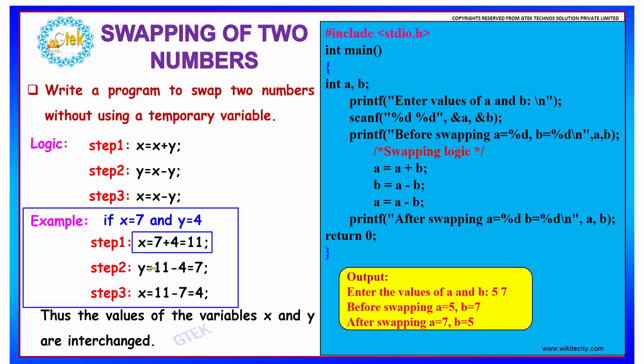And further, in our step 2, we will be subtracting the value of y from the total of two numbers, that is 11. From 11, if I am subtracting my value of y that is 4, I have the value of x as the result and I am storing my x in y. At this point, the value of y will be my x and the value of x is still the sum of both the numbers.